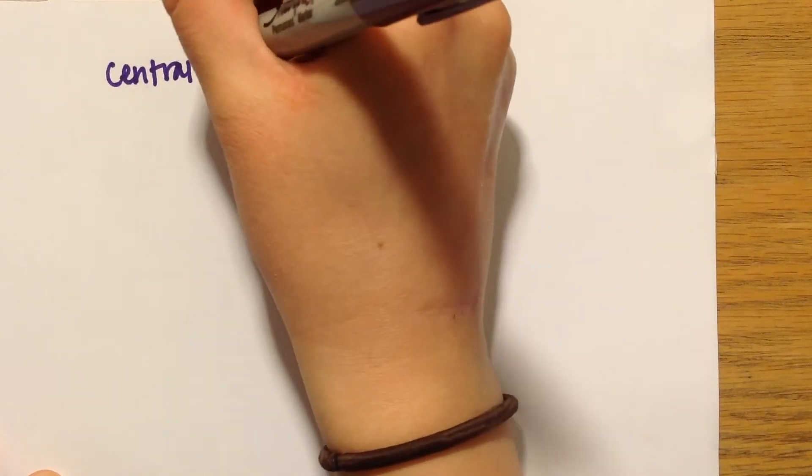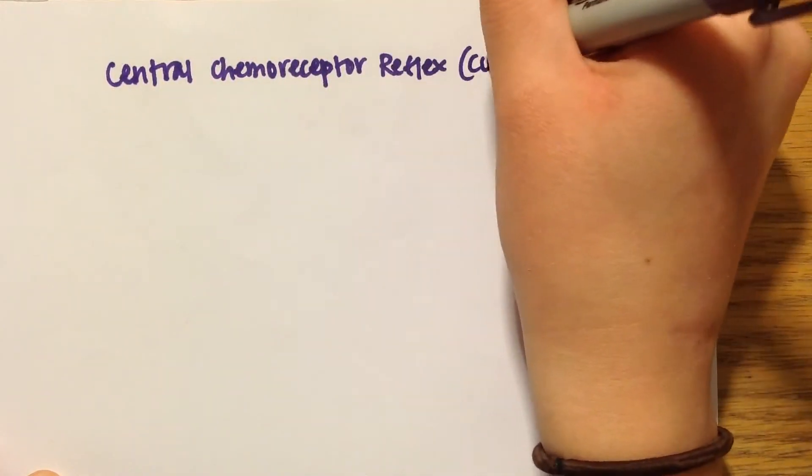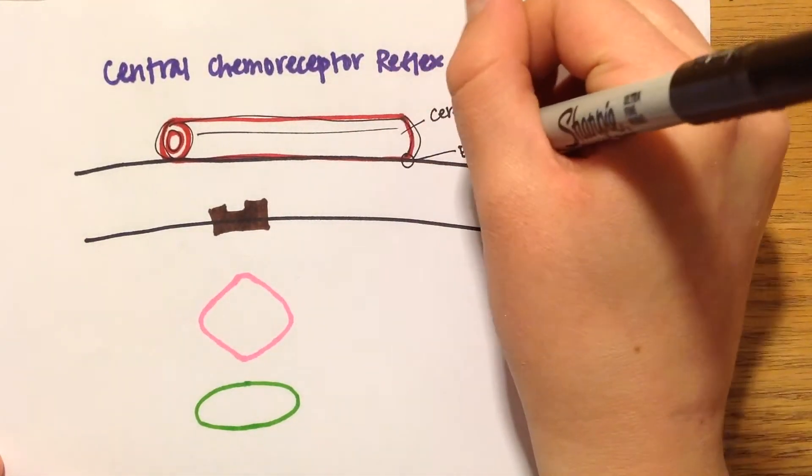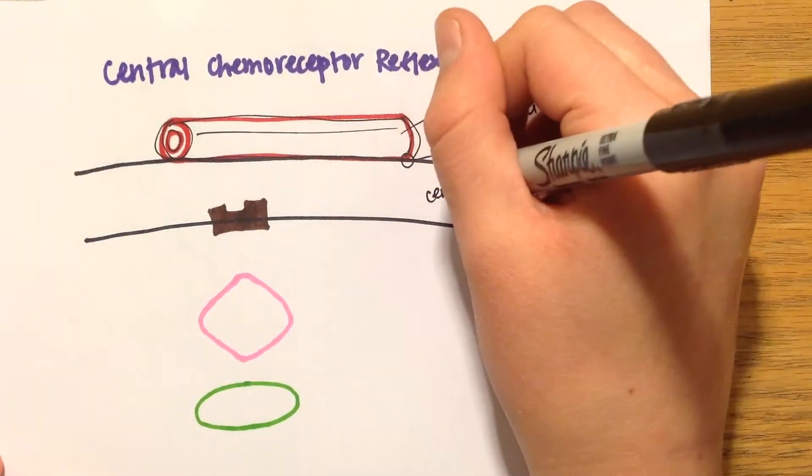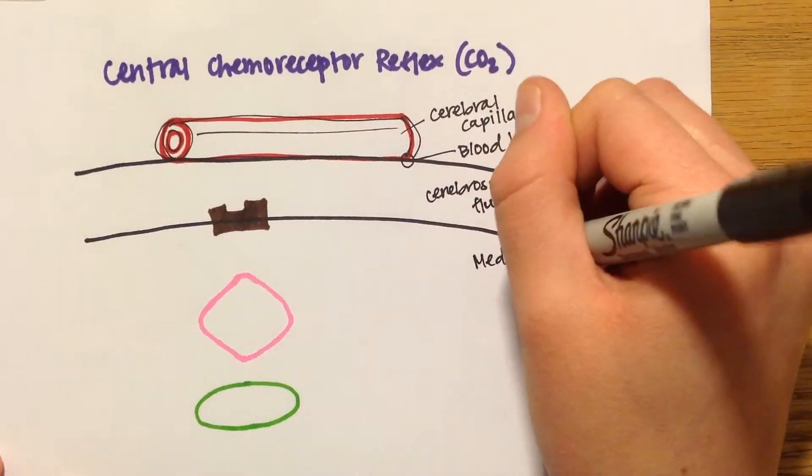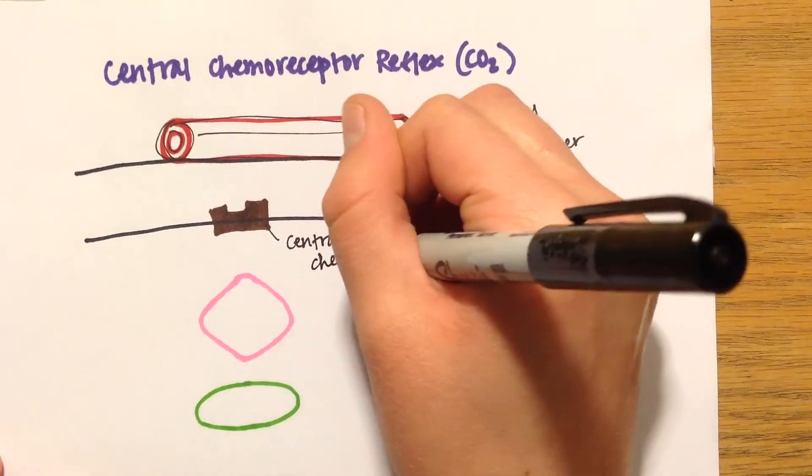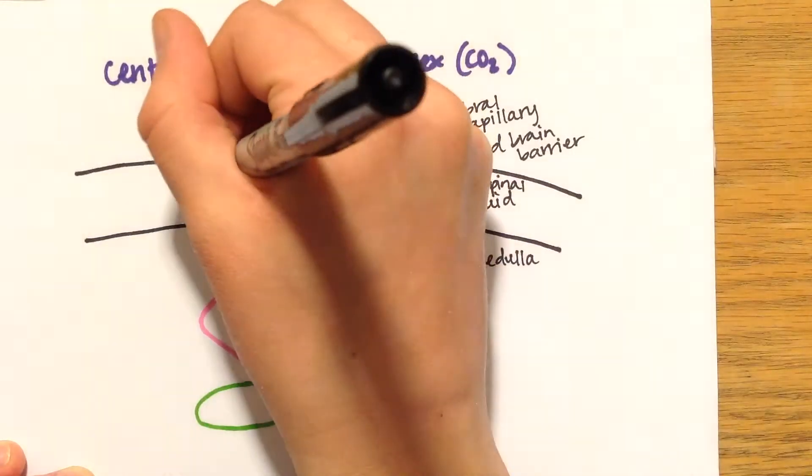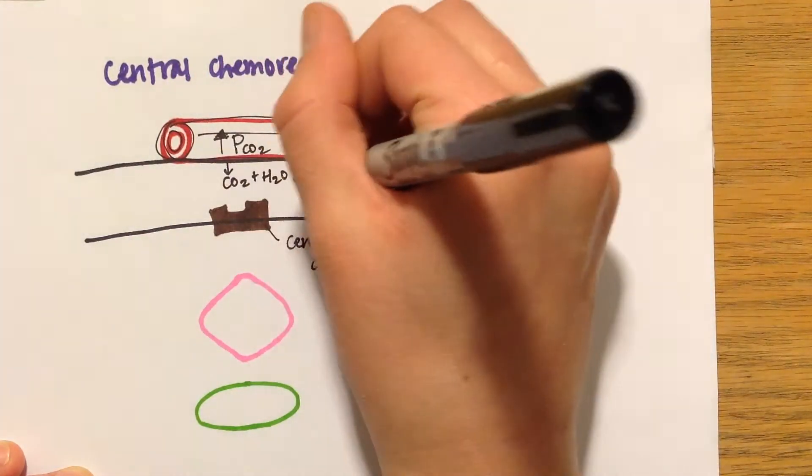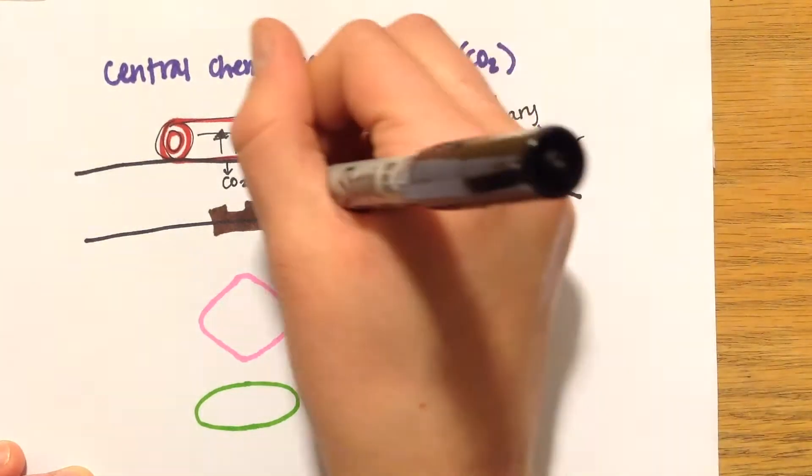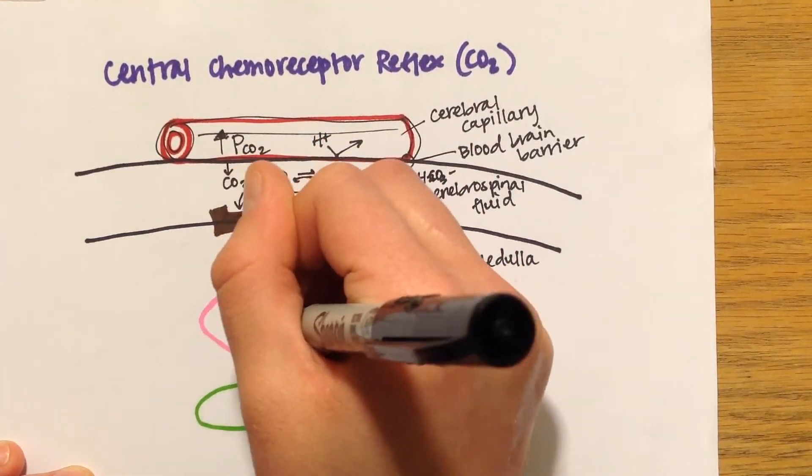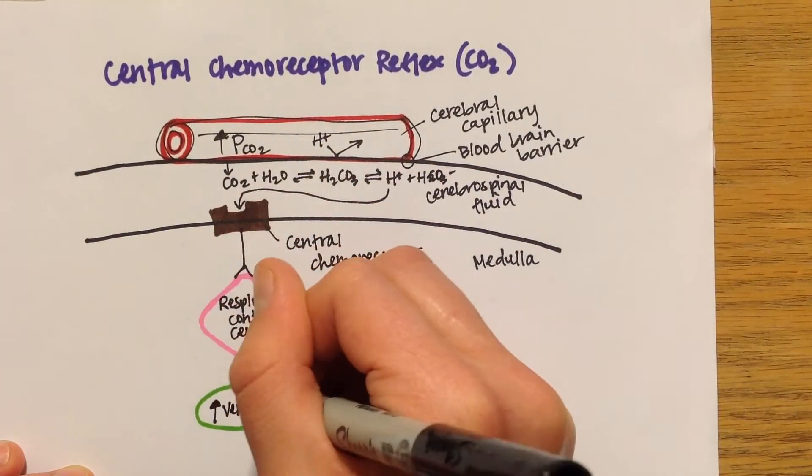Let's move on to talk about respiratory regulation through the central chemoreceptor reflex for CO2 pressure. This will be looking at the cerebral capillaries and the exchange of gases across the blood-brain barrier. Hydrogen can't cross the blood-brain barrier, so when there are high levels of carbon dioxide in the blood, the CO2 will cross the barrier and interact with water to eventually create hydrogen ion and bicarbonate. The hydrogen is able to be a ligand for the central chemoreceptors, which sends signals to the respiratory control centers to increase ventilation.